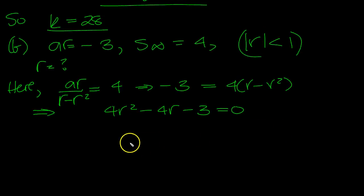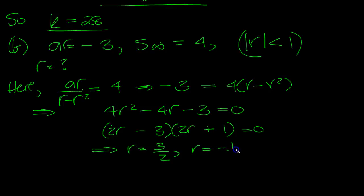Let me factor this. With a minus here and a plus here. 4r² plus 2r minus 6r is minus 4r minus 3. That's fine. So (2r - 3)(2r + 1) = 0. r equals 3/2 or r equals minus 1/2.